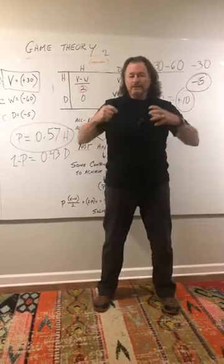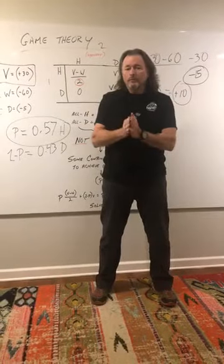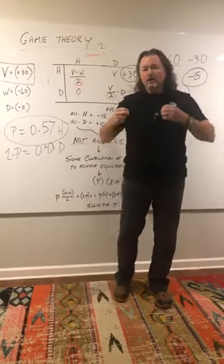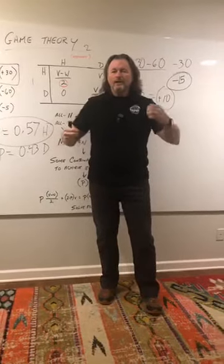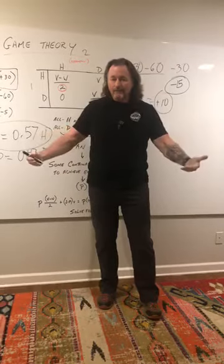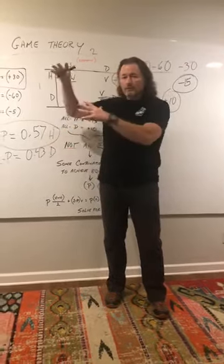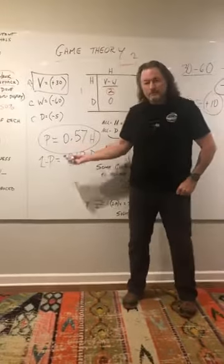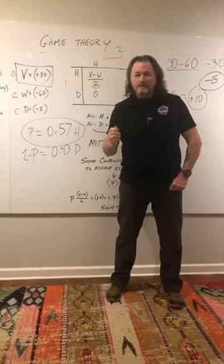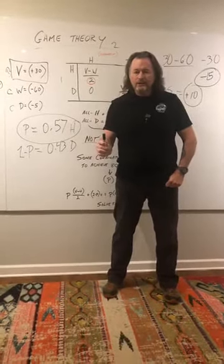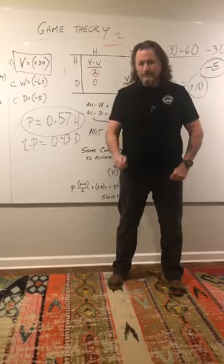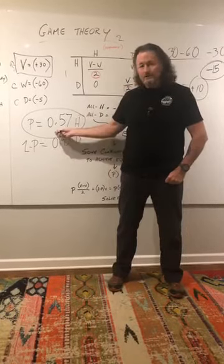Nature definitely favors that individual because that individual will be able to pass their genes forward. And that is the very beginning of aggression from a natural evolutionary stable strategy. It would behoove you to employ an aggressive attack immediately strategy 57 times out of 100. Game over.